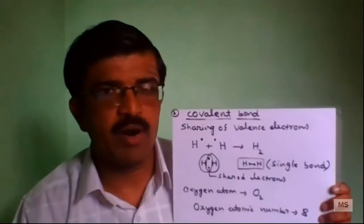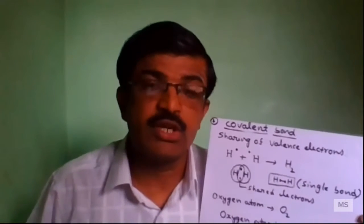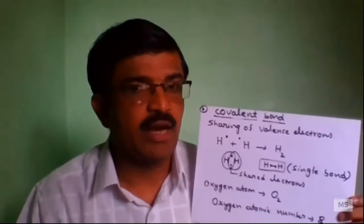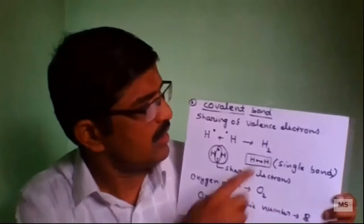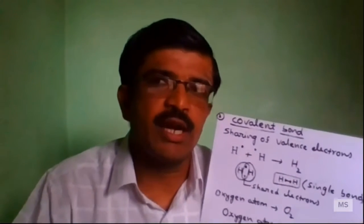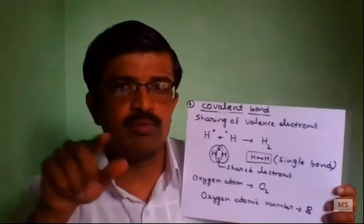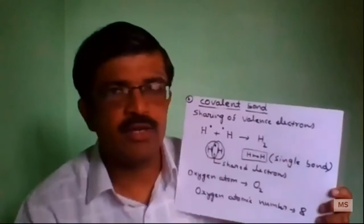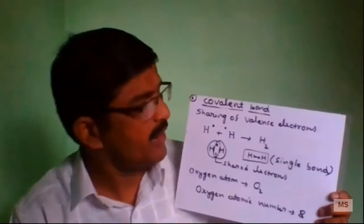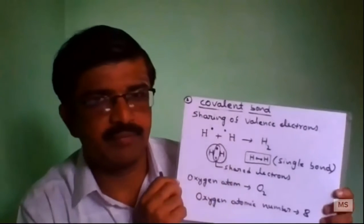In a covalent bond, two different atoms share electrons with each other. For example, hydrogen - we are going to write H2. In a hydrogen molecule, there are two atoms.